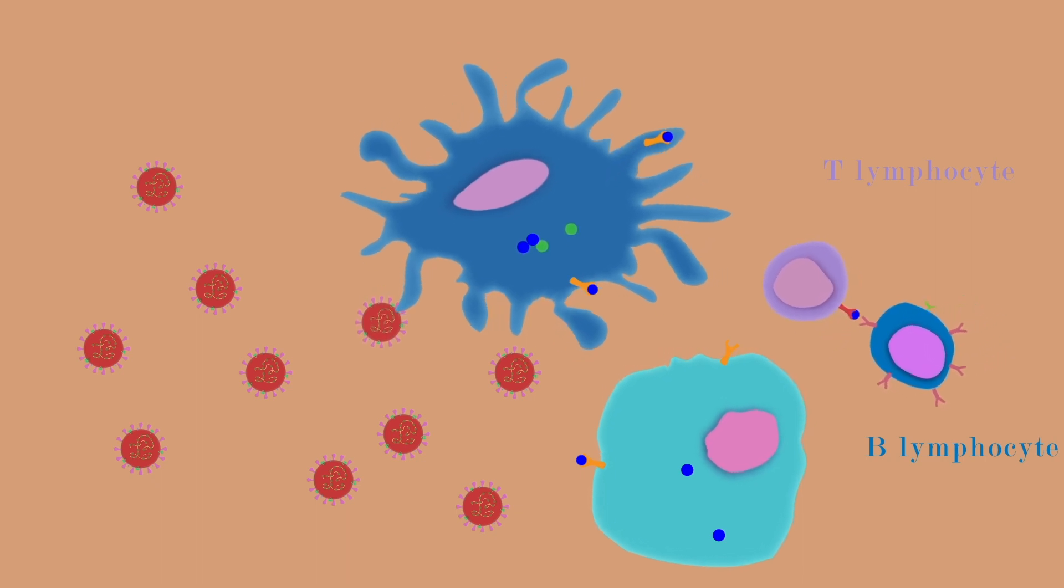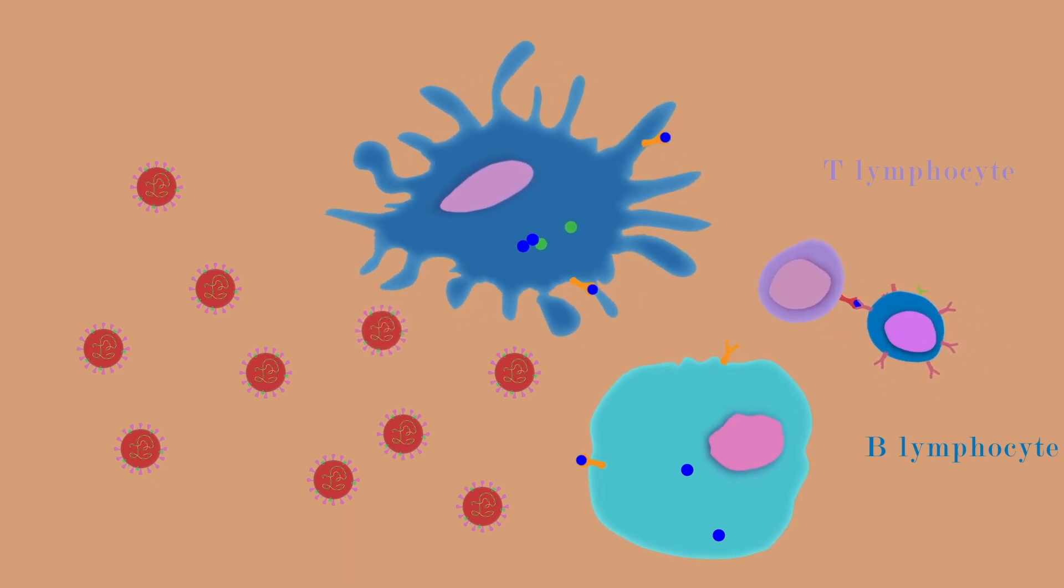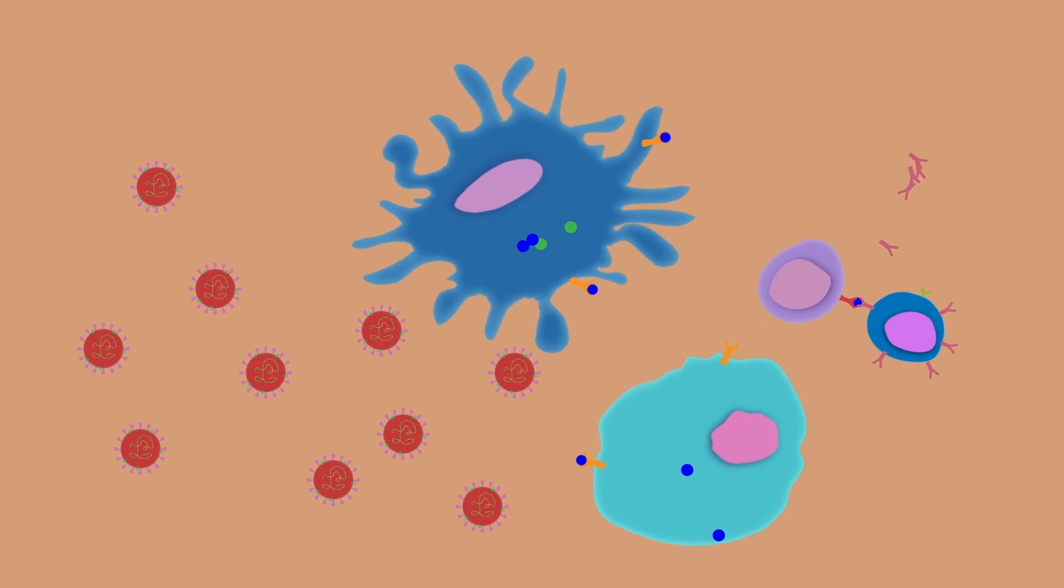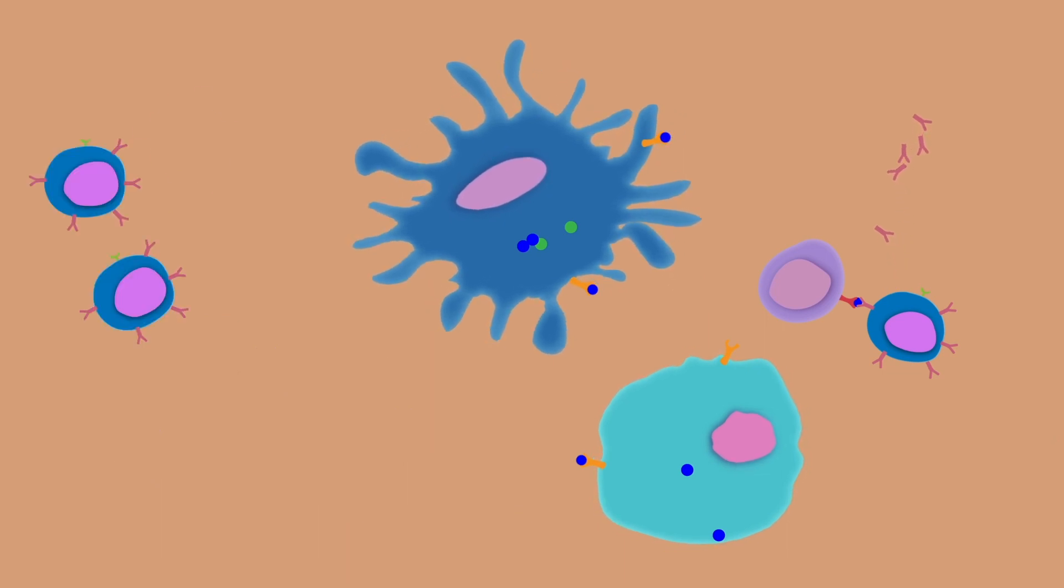And so, they initiate a series of events that leads, among other things, to the production of antibodies by B-lymphocytes, the destruction of the virus, and a possible production of B-memory and T-memory cells that will remember the virus.